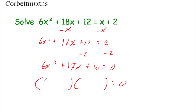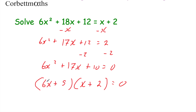Now we need to factorize 6x² + 17x + 10. With 6x², we could have 6x and x, or 3x and 2x. I'll try 6x and x first. We want two numbers that multiply to 10 and, when placed in the brackets and expanded, give 17x in the middle. I'm thinking 2 and 5 — both positive. Let's check: 6x × x = 6x²; 6x × 2 = 12x; 5 × x = 5x; 12x + 5x = 17x — fantastic. And 5 × 2 = 10. So it factorizes as (6x + 5)(x + 2) = 0.